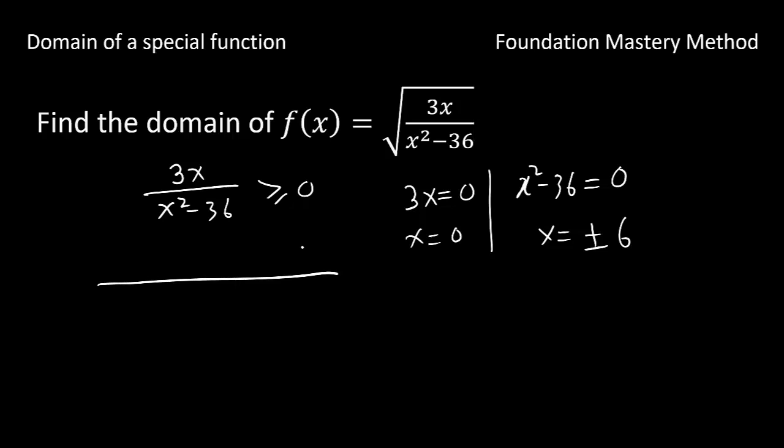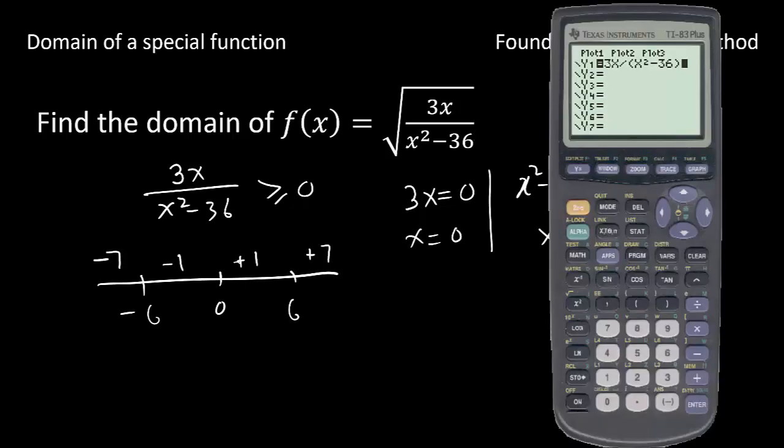Again we go to the real line test. 0 here, negative 6, positive 6. So we are taking test points: negative 7 on this side. Between negative 6 and 0 we take a test point negative 1. Between 0 to 6 we take a test point positive 1, and after 6 we take 7.